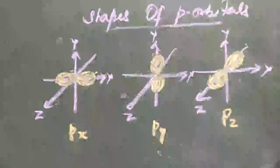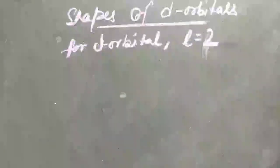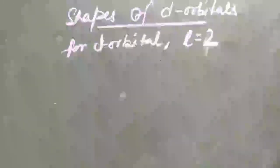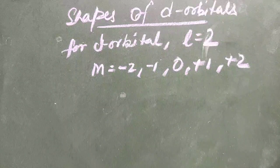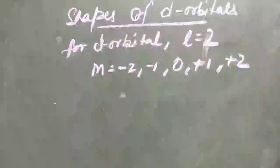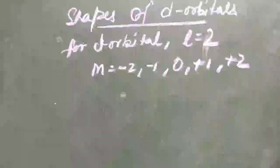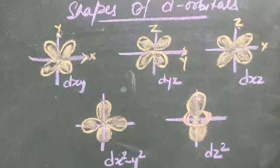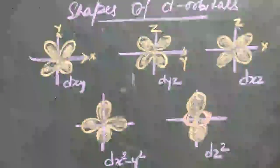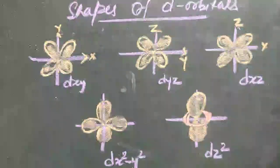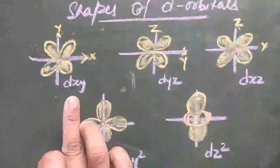Now let us see the different shapes of d orbitals. For the d orbital, l = 2, and hence the corresponding values of m are −2, −1, 0, +1, and +2. On the basis of probability calculations, their shapes can be drawn. The five d orbitals can be represented as follows.